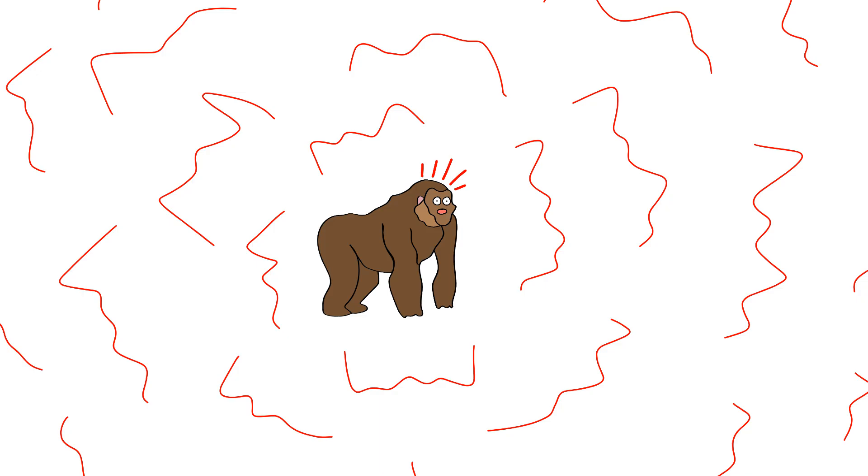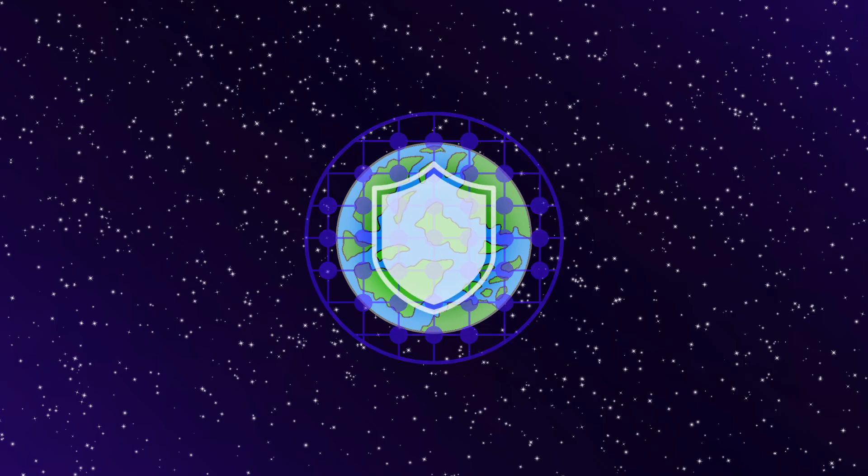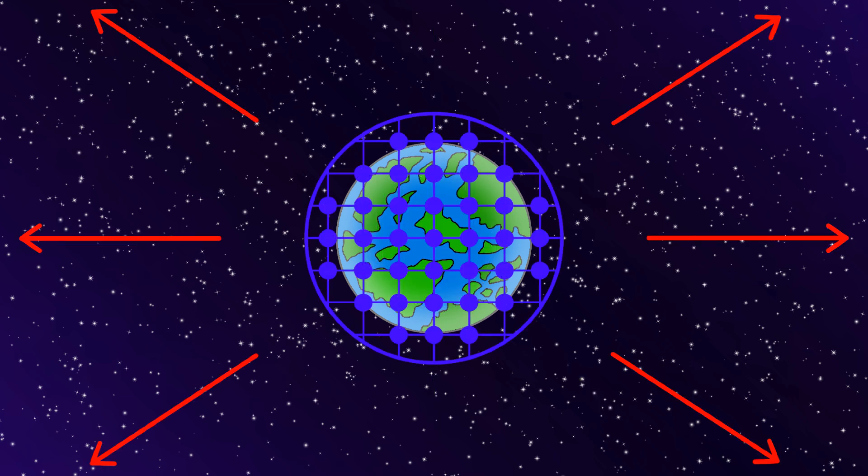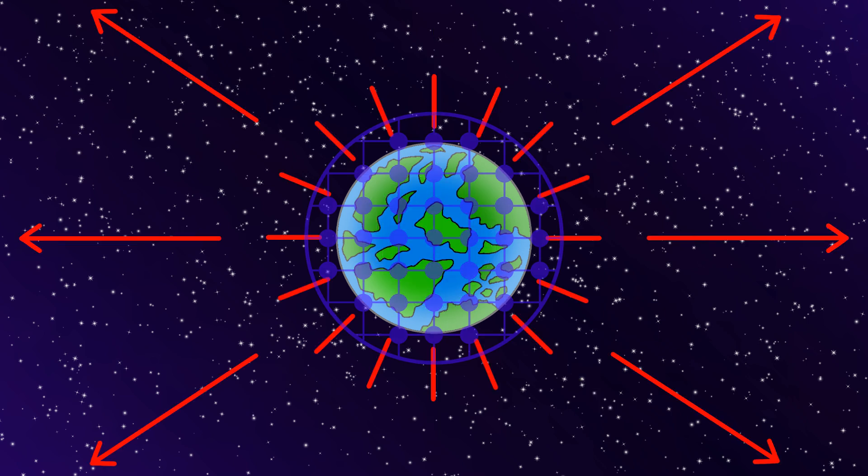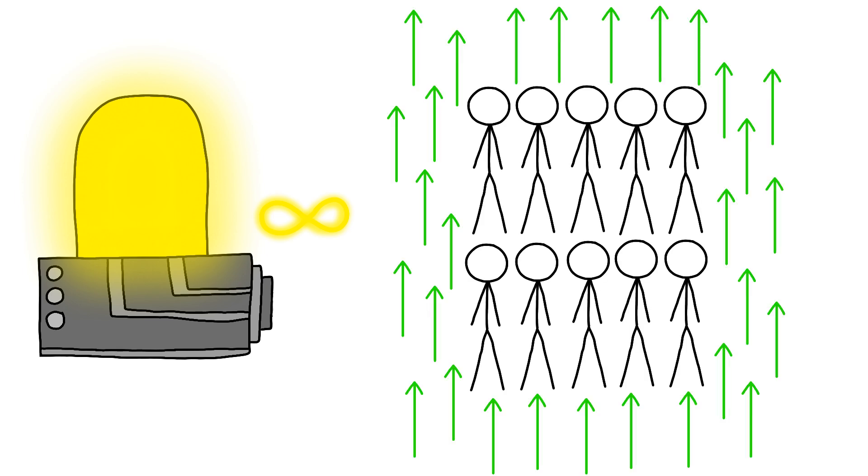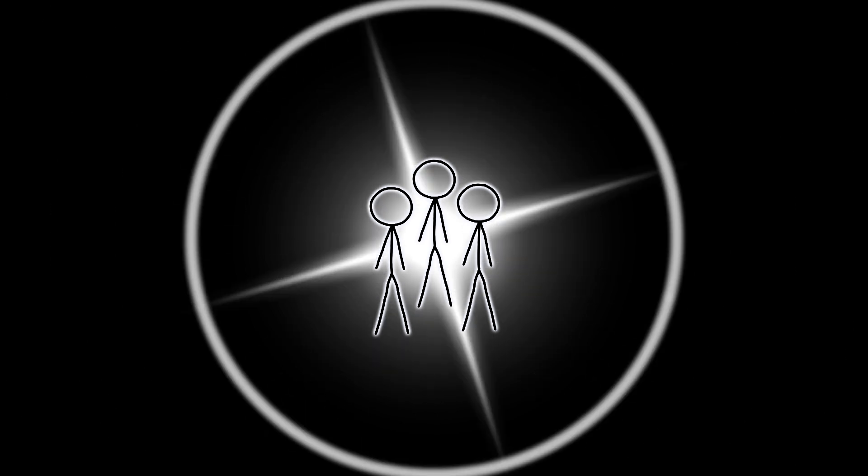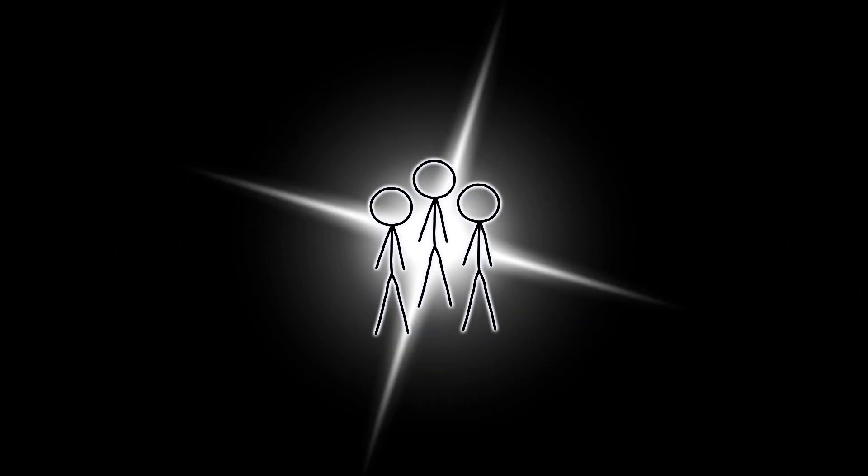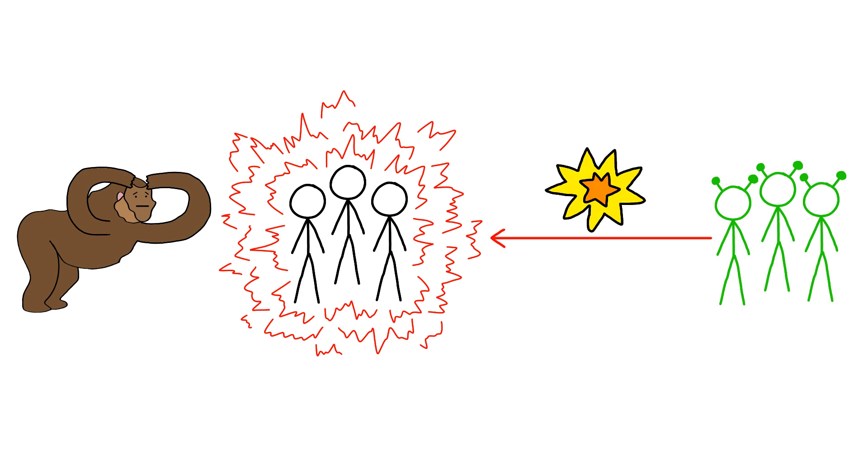But here's the ultimate horror. Monkey realizes the sphere isn't just protecting Earth from the outside universe. It's protecting the outside universe from what Earth is becoming. Because with unlimited energy, humanity is evolving at an incredible rate and developing abilities that would seem like magic. And Monkey's thinking, what if humanity becomes something that other civilizations would want to destroy?